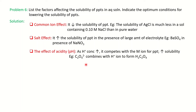The next factor is pH or acidity. If H⁺ concentration increases, it competes with the metal ion for the anion and increases solubility. For example, oxalate ion combines with acid ions to form oxalic acid, increasing solubility. So if H⁺ increases — meaning pH decreases — solubility increases.